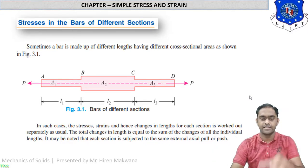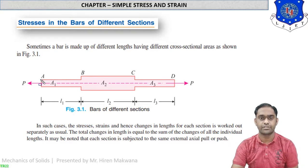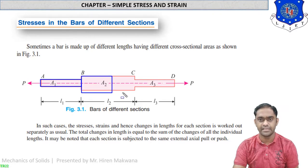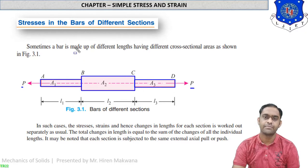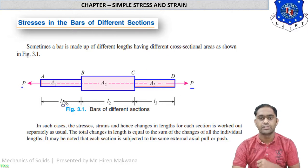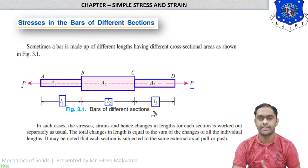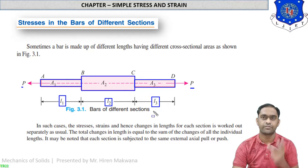But as you can see in this figure, the bars are of different cross-section areas. Bar AB has cross-section area A1, bar BC has cross-section area A2, and bar CD has cross-section area A3. The total compound bar A to D is subjected to a tensile load P. L1, L2, and L3 are the lengths of the respective bars, giving a compound bar of three sections with different cross-section areas and different lengths.